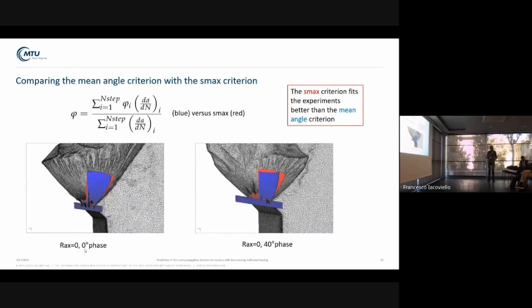Here is the comparison. The blue curves are the weighted angle criterion, the red curves are the dominant step criterion numerically, and the triangulations are the test results. We see that the red surfaces are closer to the test results than the blue ones.